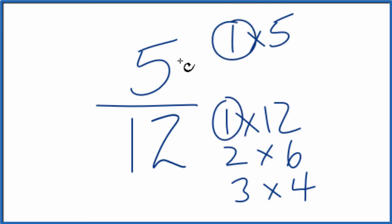So because of that, this is already simplified. It's been reduced to its lowest terms. You can't reduce 5 twelfths any lower.